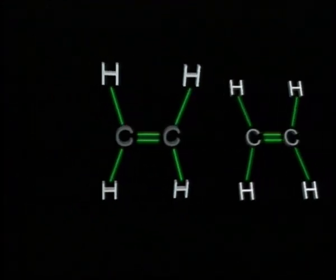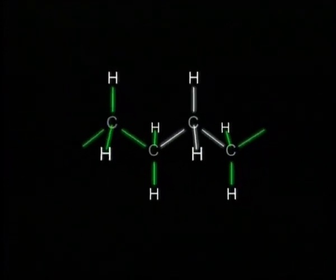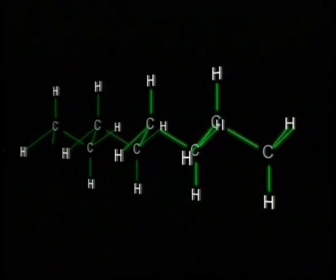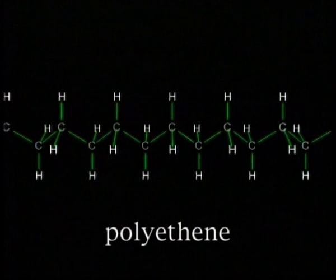Some, like ethene, simply add together as the electrons in double bonds rearrange themselves to form new bonds linking the monomers together. This is an example of an addition reaction, and the result is polyethene. There are no other by-products of the reaction.